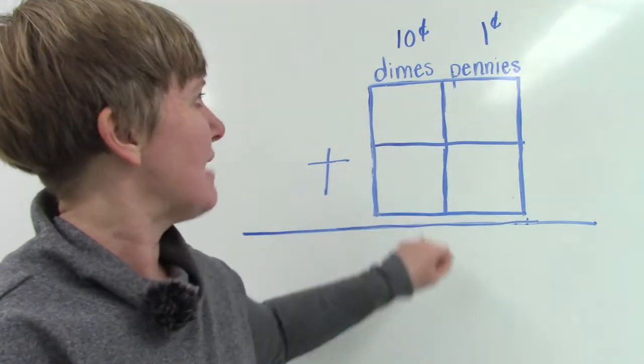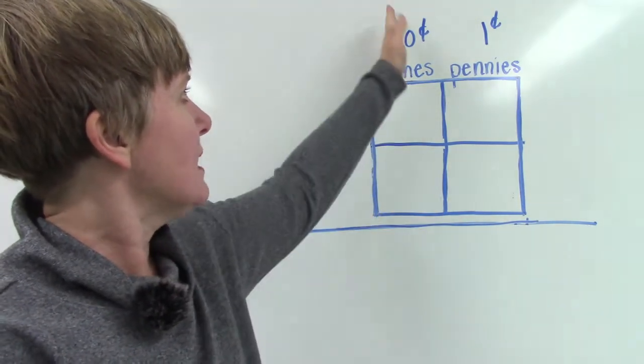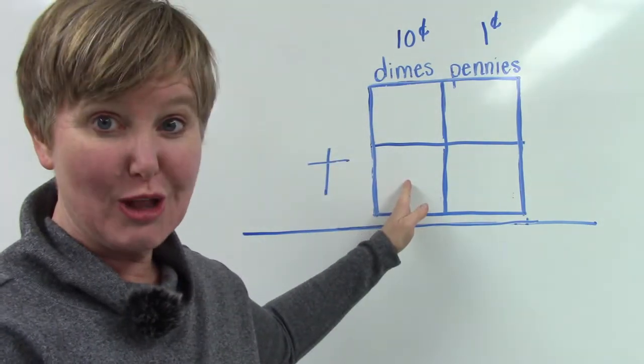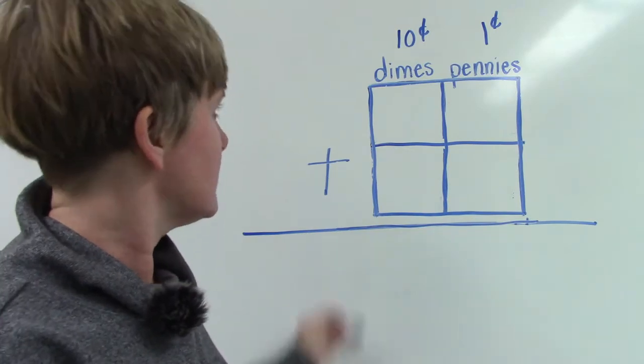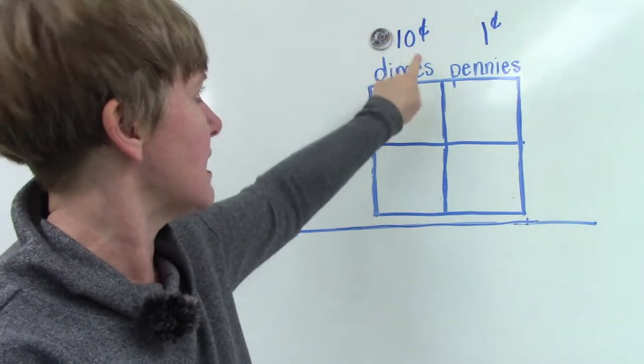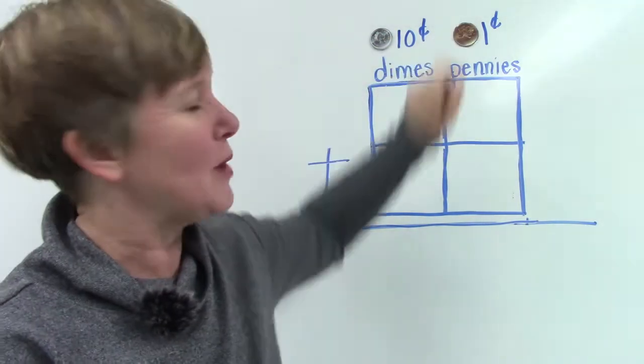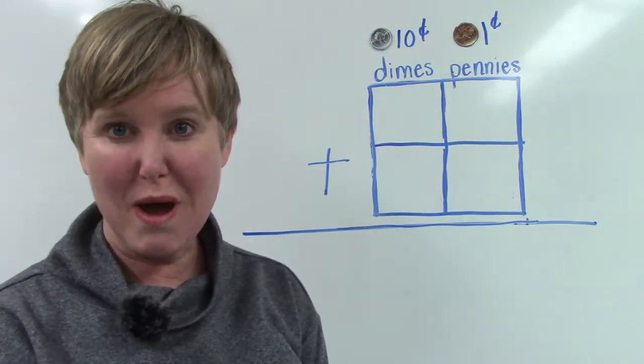Remember our little graph that we made? We have a dimes column and a pennies column. And so I am going to put a little dime up here. Dimes are worth ten cents and our pennies are worth one cent.